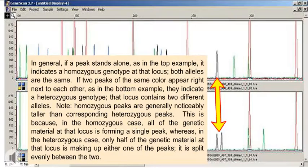In general, if a peak stands alone, as in the top example, it indicates a homozygous genotype at that locus. Both alleles are the same. If two peaks of the same color appear right next to each other, as in the bottom example, they indicate a heterozygous genotype; that locus contains two different alleles.